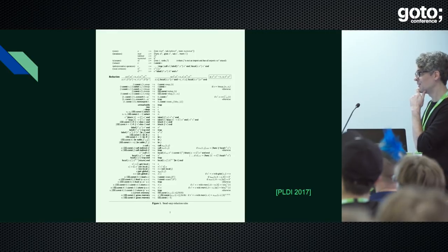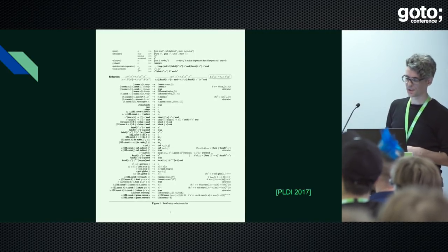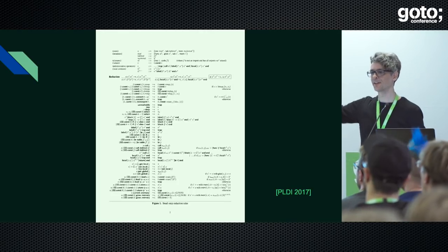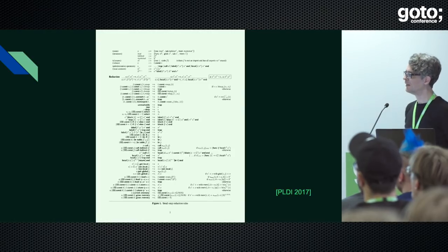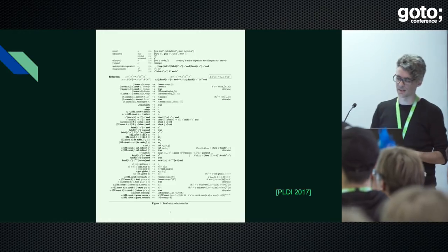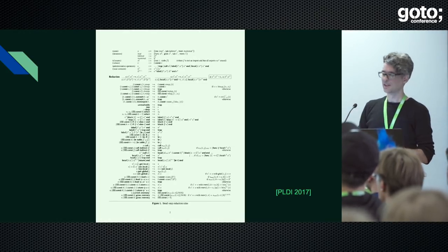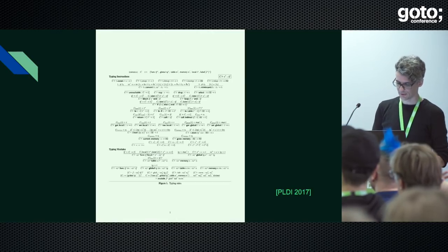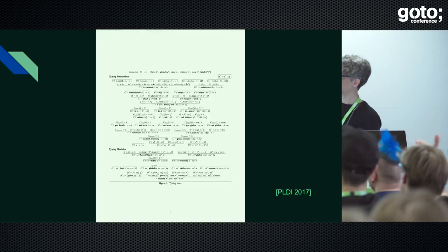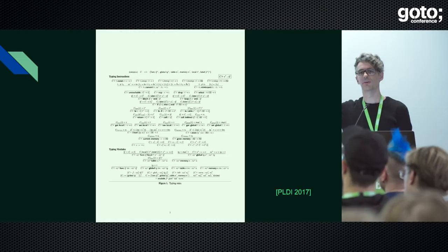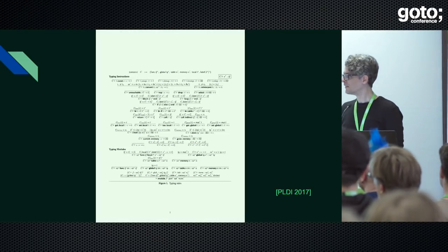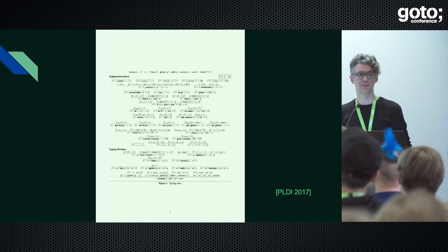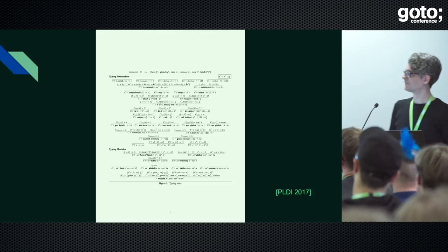The entire execution semantics of WebAssembly fits on one page in structural operational semantics notation as reduction rules. The typing rules that completely specify validation for WebAssembly are not even a full page. You might be more impressed by this knowing that the specification of bytecode verification for the JVM takes 160 pages.